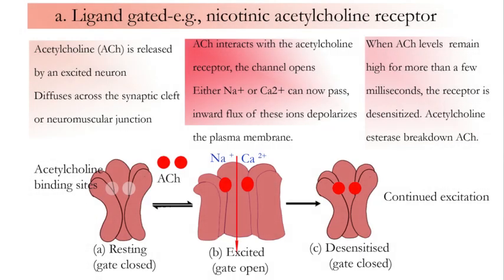Ligand-gated ion channel — example: nicotinic acetylcholine receptor. Initially, the receptor is in closed condition — resting state. Then the receptor opens — excited state. And finally the gate is closed again — desensitized state.